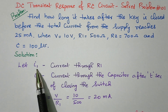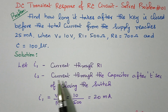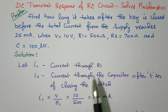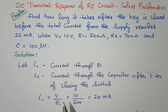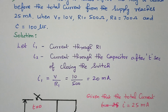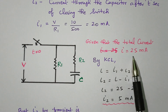In this solution, I1 is the current through R1 because it is a separate branch — two branches are available. Total current I equals I1 plus I2, where I1 is the current through resistor R1 and I2 is the current through the capacitor branch after T seconds of closing the switch. I1 can be easily calculated as V divided by R1: 10 divided by 500, which gives 20 milliampere. We need to find the I2 value.